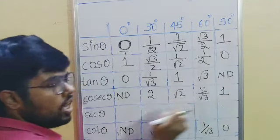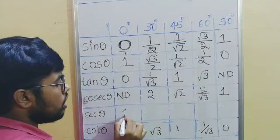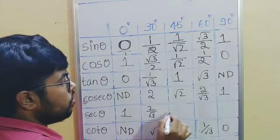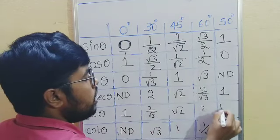write whatever written for cosec in reverse order for sec: two, one, two by root three, root two, two, and not defined.